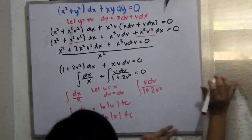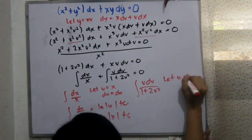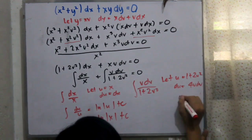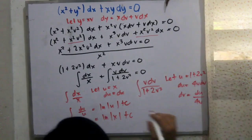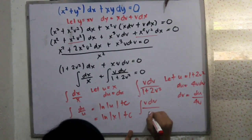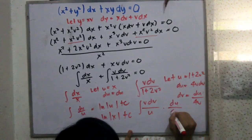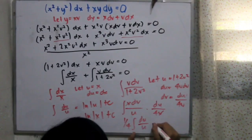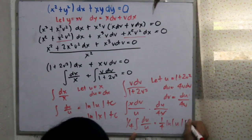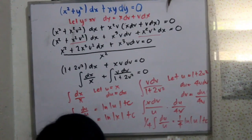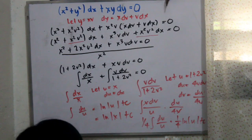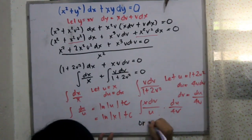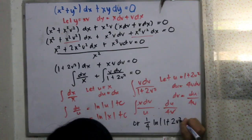We integrate v dv over 1 plus 2v squared. Let u equals 1 plus 2v squared, so du equals 4v dv, meaning dv equals du over 4v. The v cancels, leaving us with one fourth integral of du over u, which equals ln u plus c. So the result is one fourth ln u plus c. Substituting back u equals 1 plus 2v squared, we get one fourth ln of 1 plus 2v squared plus c.